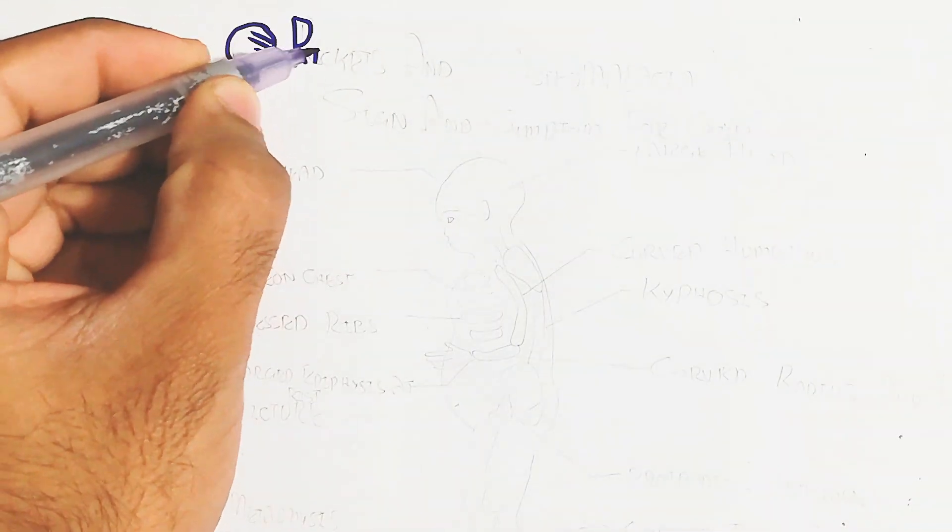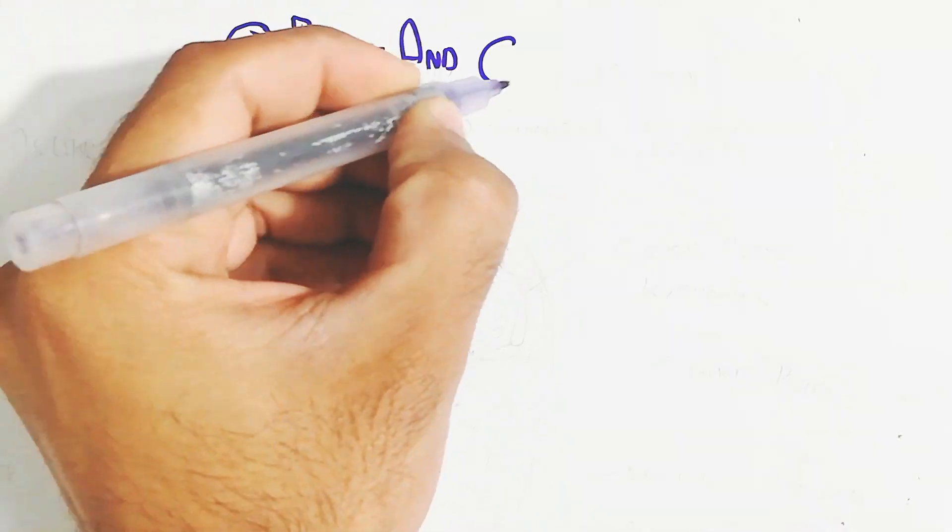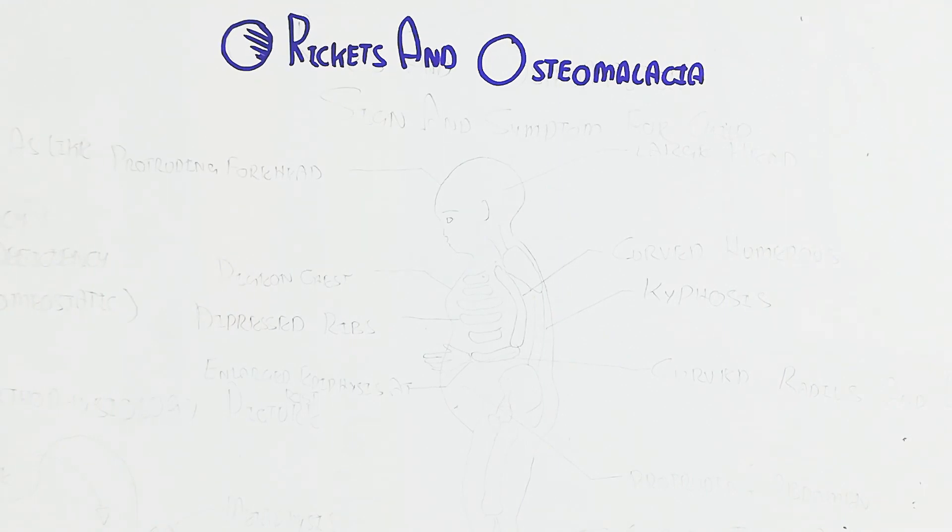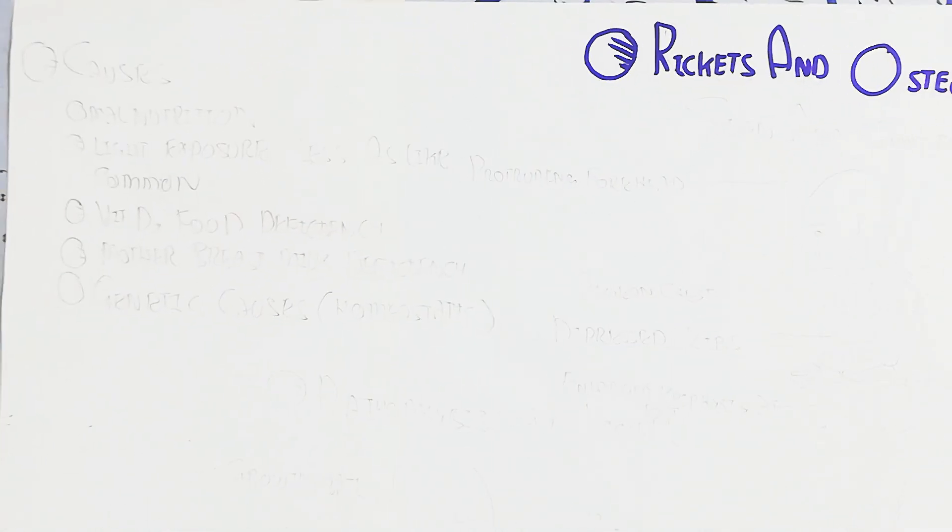Hello, in this video we will understand about rickets and osteomalacia. This is a disease due to the deficiency of phosphate and calcium. Let's begin to understand.